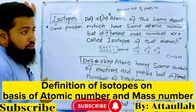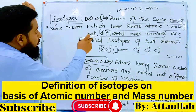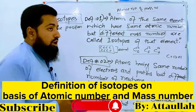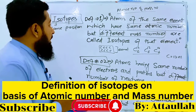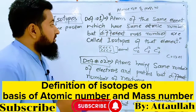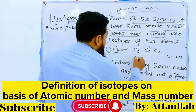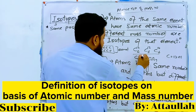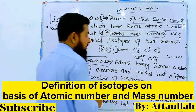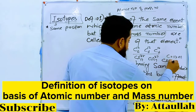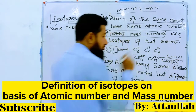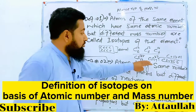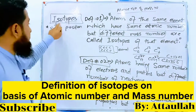Isotopes have the same atomic number but different mass numbers. For example, chlorine has an atomic number of 17, and its isotopes have mass numbers of 35 and 37. In the periodic table, chlorine's atomic mass is 35.5 — that is the average atomic mass. Isotopes occupy the same position in the periodic table.